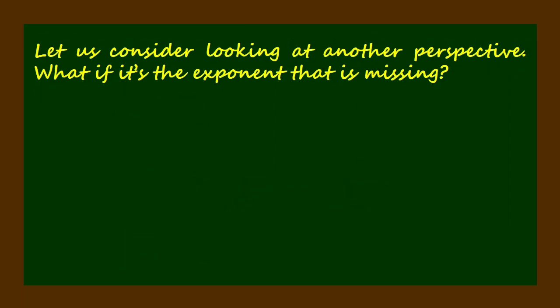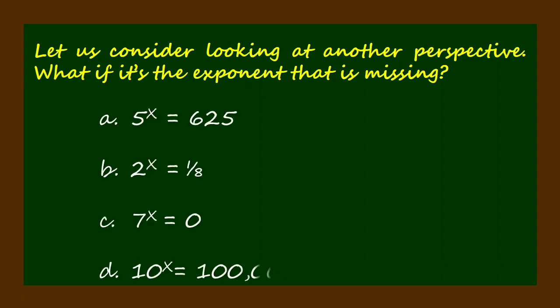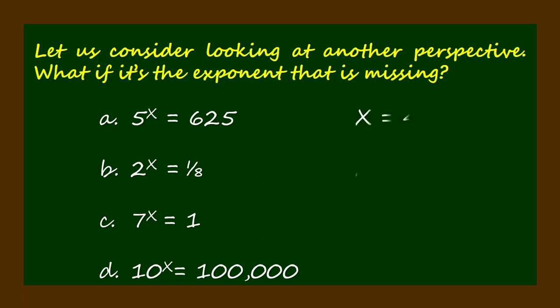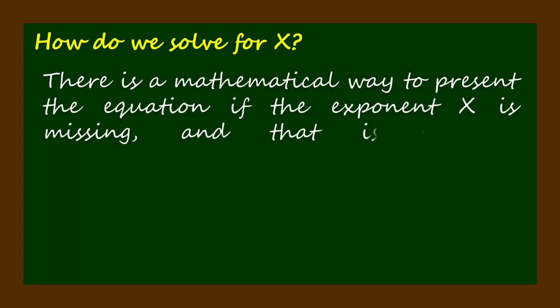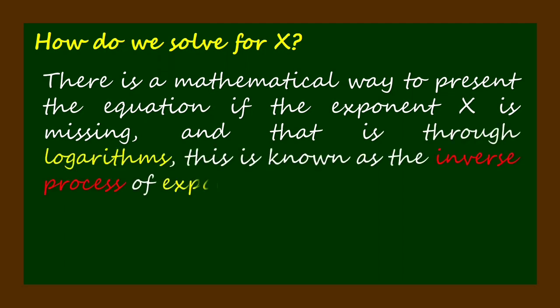Let us consider looking at another perspective — what if it's the exponent that is missing? Notice that each of the exponential equations has an exponent denoted by x. How can we determine the value of x? There is a mathematical way to present the equation if the exponent x is missing, and that is through logarithms. This is known as the inverse process of exponentiation.